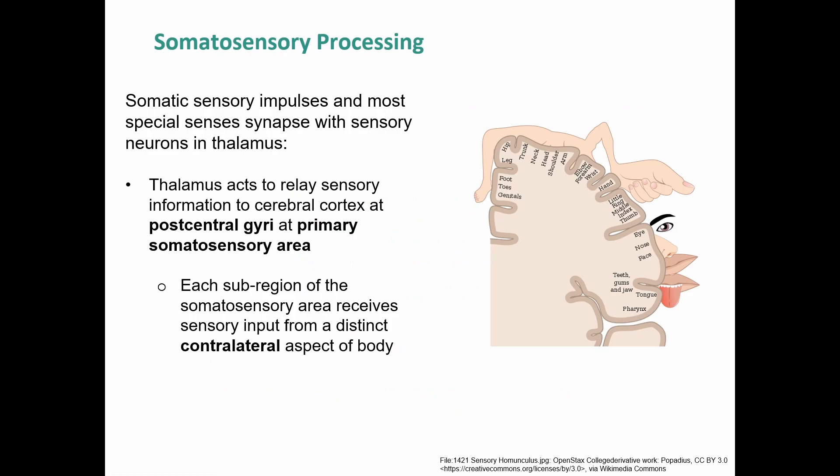For processing somatosensory information, somatic sensory impulses and some special senses synapse with sensory neurons in the thalamus. From the thalamus, they are relayed to the cerebral cortex at the post-central gyrus — the ridge right after the central sulcus, which divides the parietal from the frontal lobes. The primary somatosensory area is on the post-central gyrus, placing it in the parietal lobe.